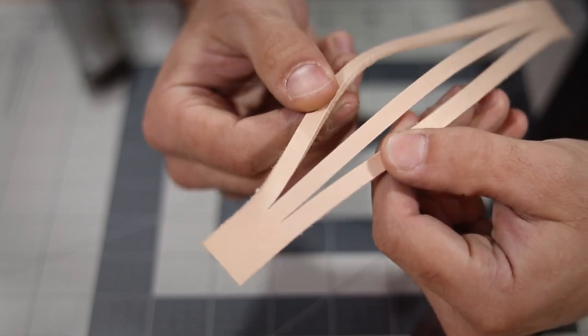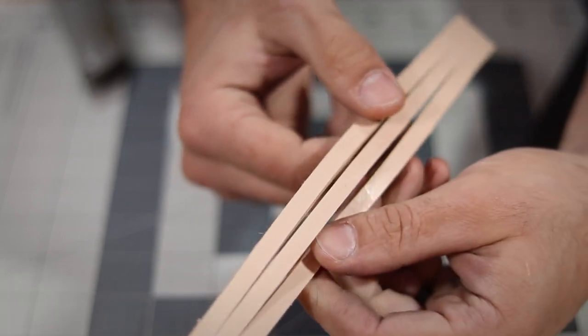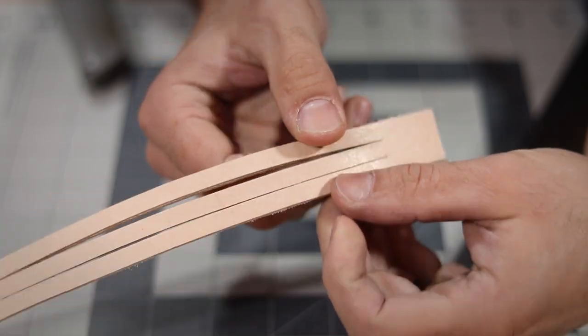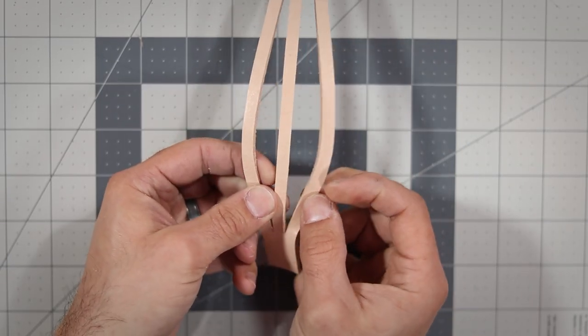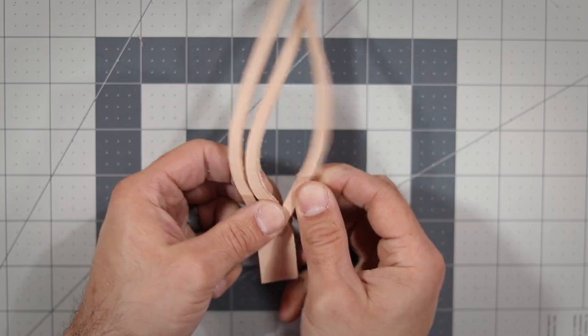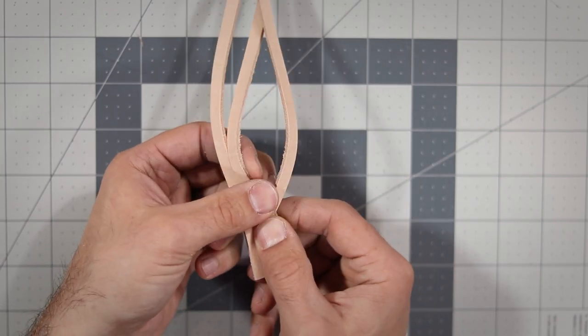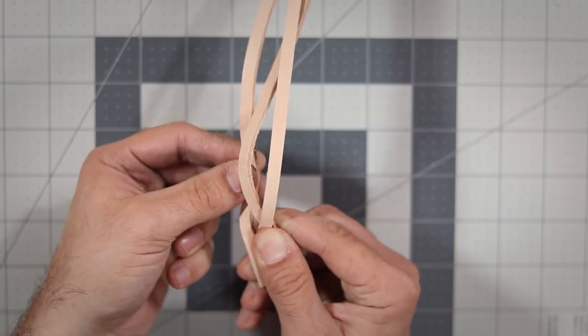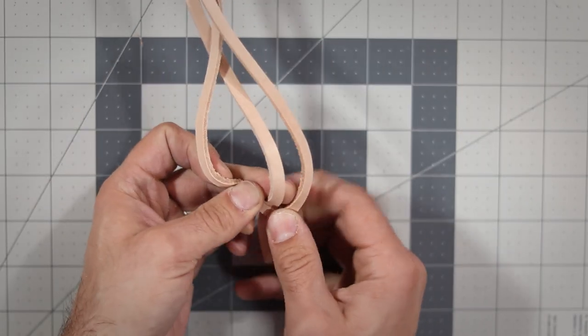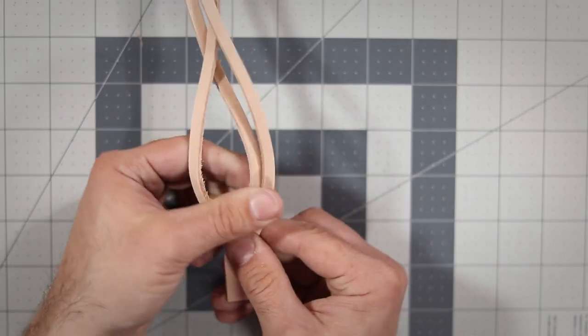Now that we have three even strips to work with, it's time to braid. To start, take your rightmost strip and pass it under the center strip, making it the new center. Next, take your left strip and pass it under the center, now making that the new center, and starting our weave.